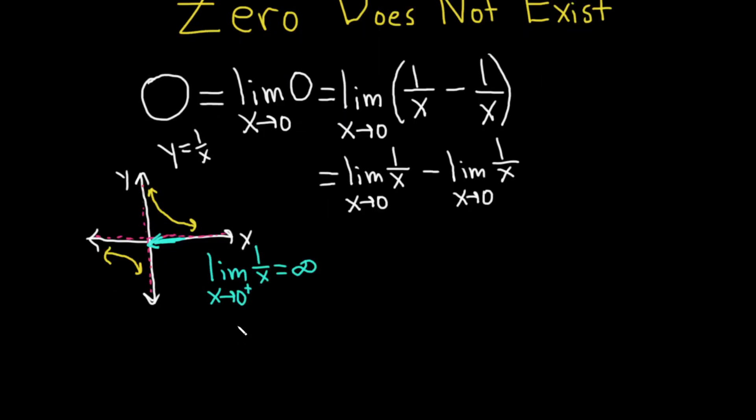In this case we would say the limit does not exist, but infinity is just a more accurate description of what's happening. So we write infinity rather than does not exist. Now let's look at the limit as x approaches zero from the left of 1/x.